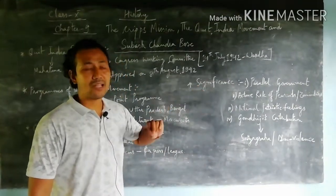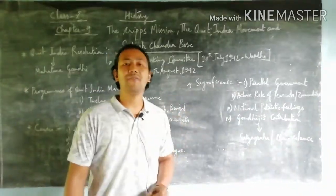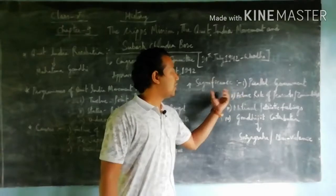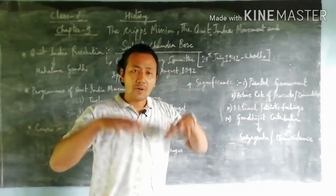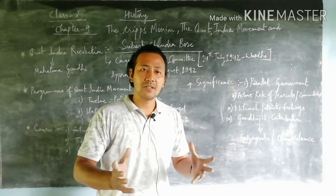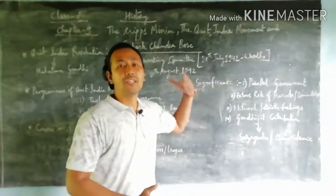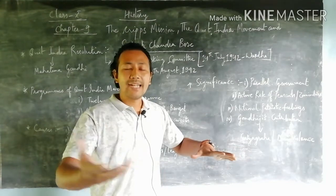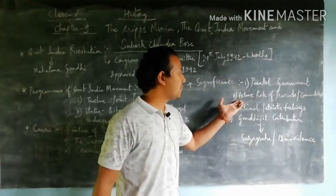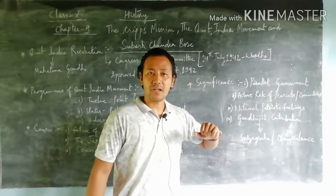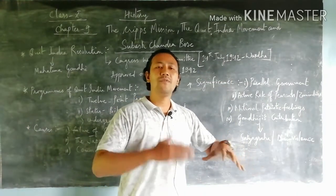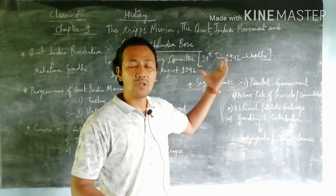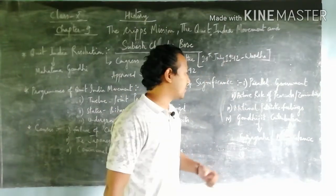The last topic is the significance of the Quit India Resolution of 1942. First, regarding parallel government: leaders like Mahatma Gandhi, Sardar Vallabhbhai Patel, and many others associated with the resolution wanted to create a parallel government against the British, making it easier to achieve independence as soon as possible. Second, the active role of peasants and zamindars — they too came forward to support Gandhi and other leaders in all programs and planning.